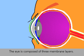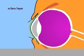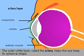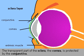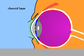The envelope of the eye is composed of three membrane layers. The outer white layer, the sclera, helps the eye keep its spherical shape. The transparent part of the sclera is the cornea, a kind of window to the eye and is protected by the conjunctiva.